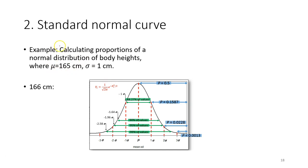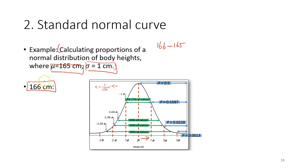Now another example using the same population. We are calculating the proportion of a normal distribution of body height where the mean is 165 and the standard deviation is 1, but now we want to calculate the proportion of students with body height larger than 166. The value 166 is away from the mean, so we need to find the difference: 166 minus 165 equals 1 cm. We then divide this by the standard deviation of 1 cm.